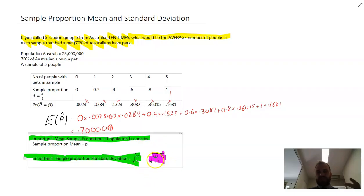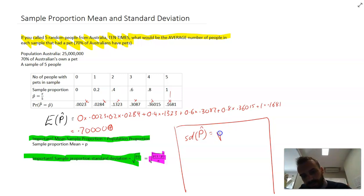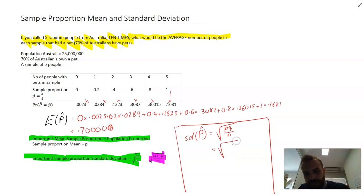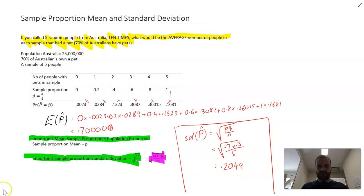This formula appears on a lot of formula sheets. The standard deviation of the random variable — which is the sample proportion — is equal to the square root of PQ over N. In this particular instance, that's equal to the square root of 0.7 times 0.3 over N, which is 5. On our calculator, the standard deviation is 0.2049.